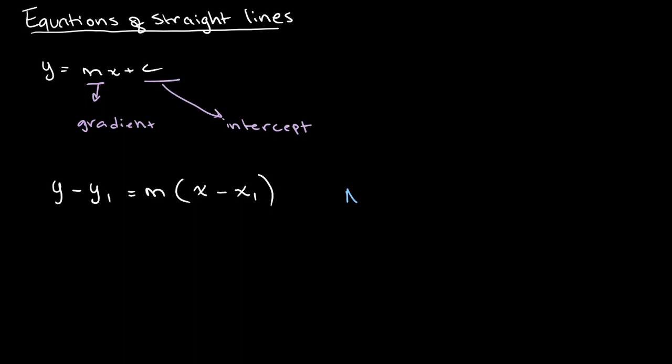So what this essentially means is that if we have any point, let's say point A with the coordinates x1, y1, and A has a gradient of m, then the equation for A will be y minus y1 equals m times x minus x1.